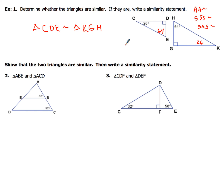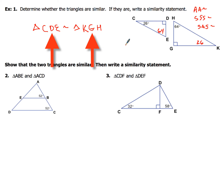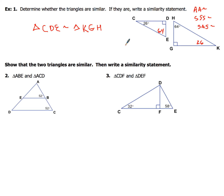When writing the similarity statement, make sure your angles correctly correspond: C must go with K, D must go with G, and E must go with H — they have to be in that same order. You could also write it another way, like EDC ~ HGK: since E is first, H has to be first in the second triangle, and K would be last. Just make sure your angles are correctly set up.